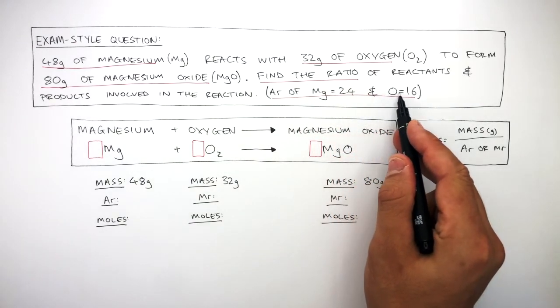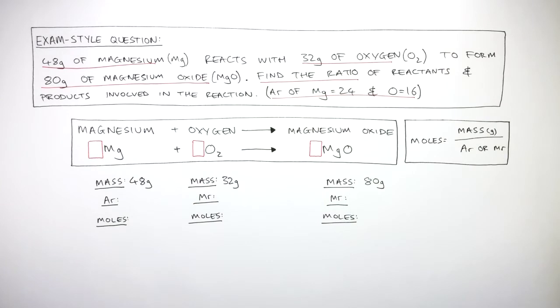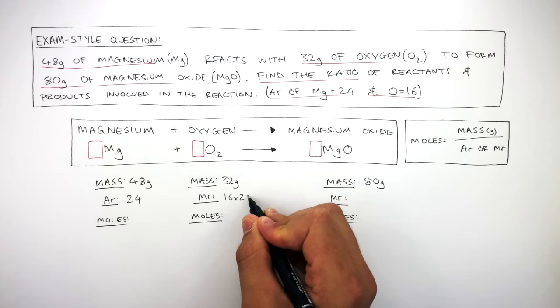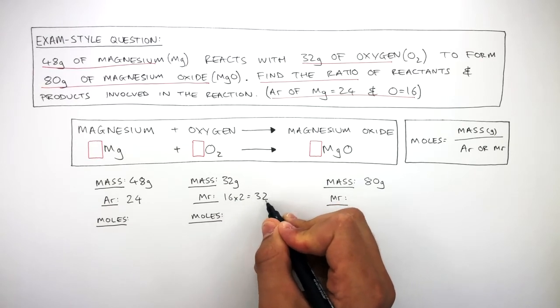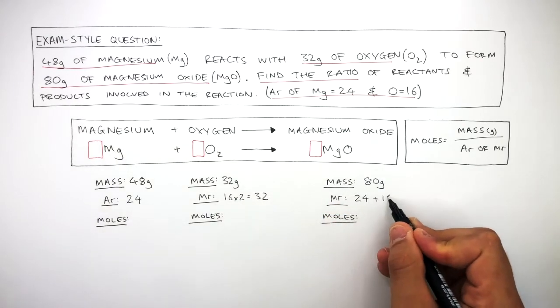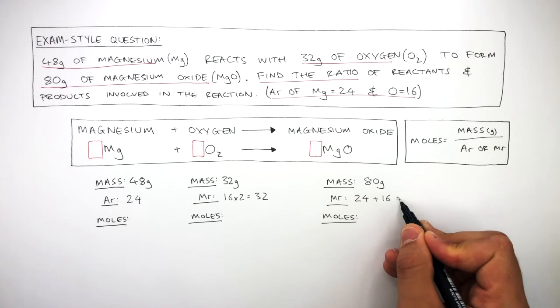We now use this information to write the AR or MR of each substance. So the AR of magnesium is 24. The MR of oxygen is 32. And the MR of magnesium oxide is 40.